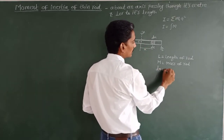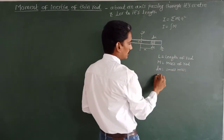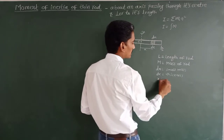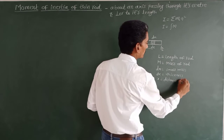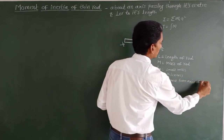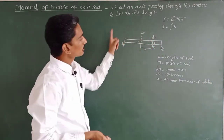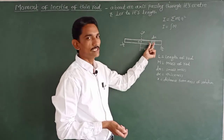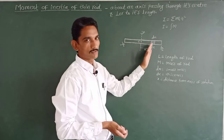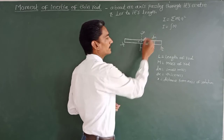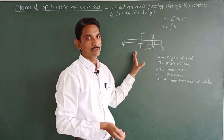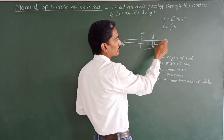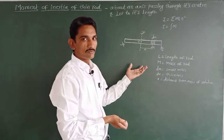Here dm indicates the small mass for the small part, dx is the thickness of the small part of the rod, and x is the distance of the small part from the axis of rotation. This rod is made up of small elements each having small mass dm. So first we determine the moment of inertia of this small mass dm, then we can determine the total moment of inertia of the rod.